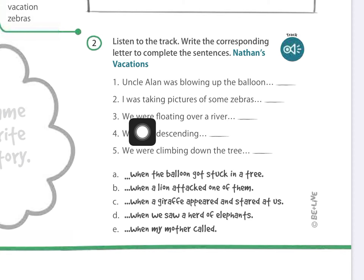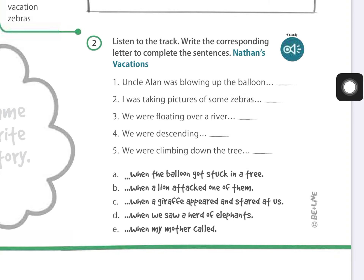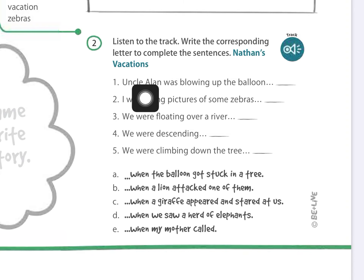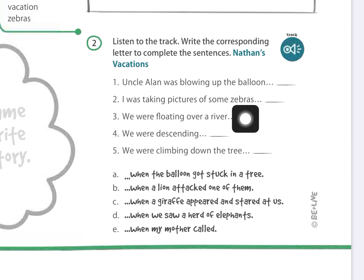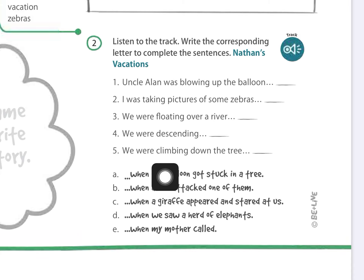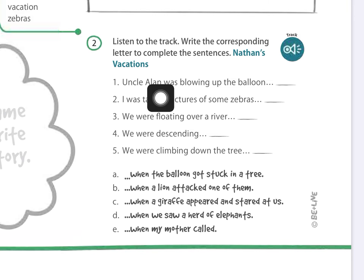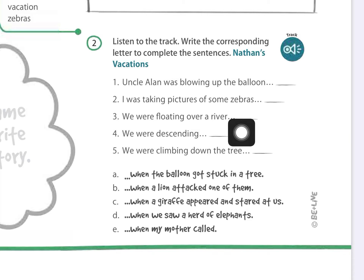We have five sentences that are incomplete, and we have to complete them using different sentence options labeled with letters. For example, if you think sentence number one is completed by option A, you write the letter A. If you think it is completed by option D, you write D. So you will end up with one complete statement — for example, 'Uncle Alan was blowing up a balloon when the balloon got stuck in a tree.'